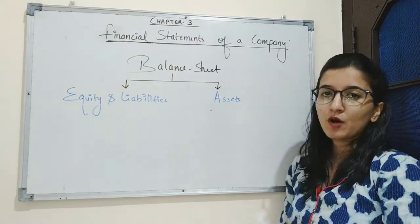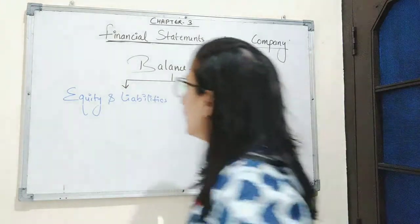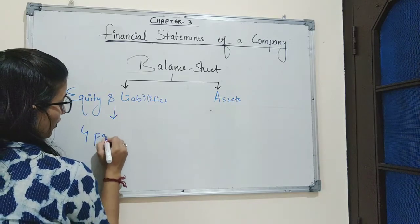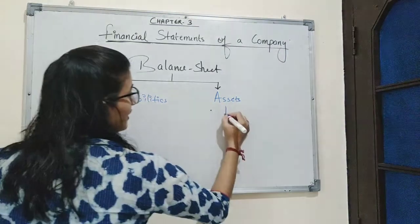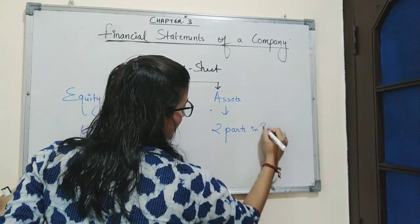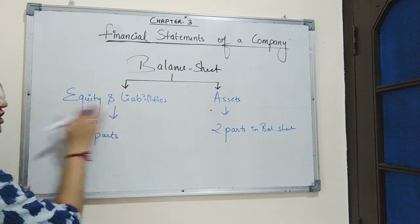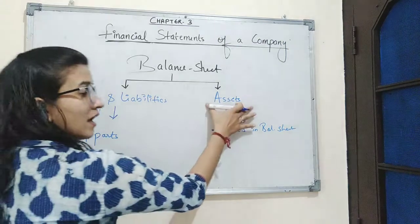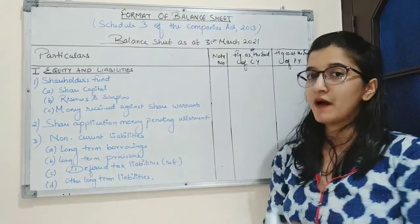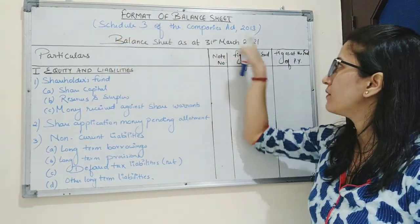Asset is the property of the business — it is a kind of investment in the business. Equity and liabilities has four parts in the balance sheet, and assets consists of two parts. Equity is a major head in the balance sheet, as is asset. Here is the format of balance sheet, which is prescribed in Schedule 3 of Companies Act 2013.